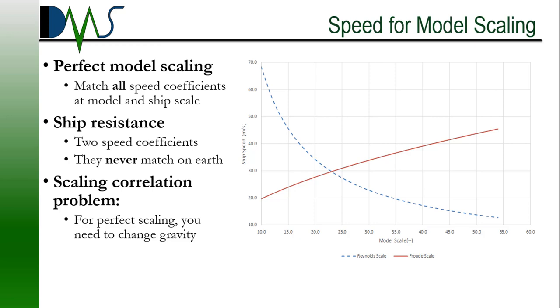Remember how I said that ship resistance was dominated by two major forces? Yeah, that's going to be a problem. Because we've got waves and viscous resistance. That correlates to two different speed coefficients, the Froude number and the Reynolds number. Uh-oh. Two different formulas that work in opposite directions.